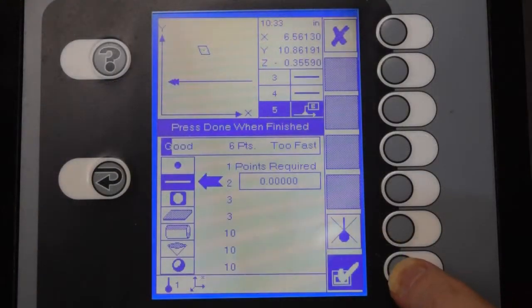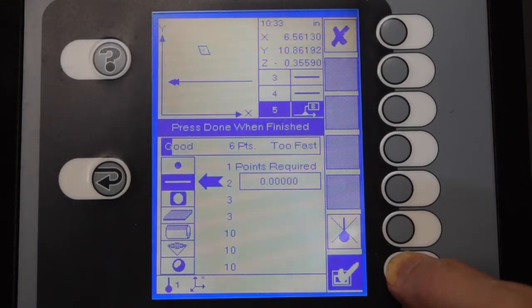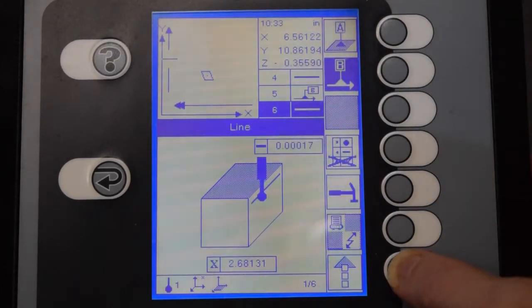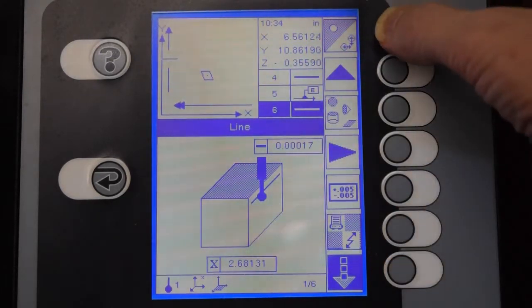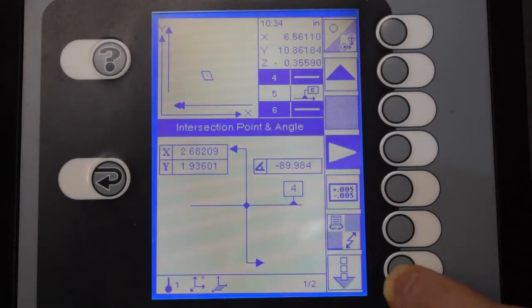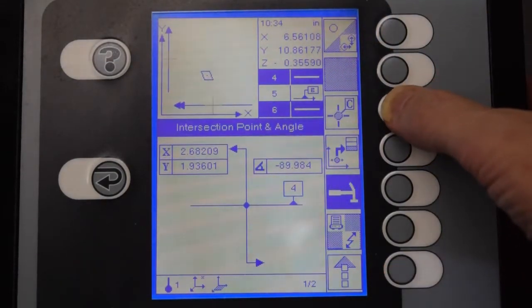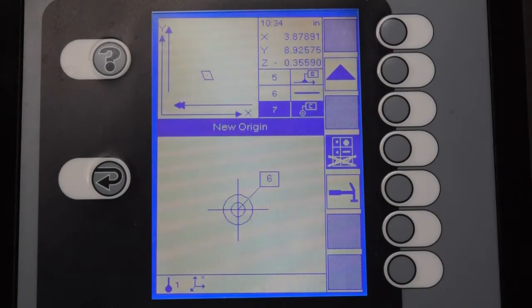Now we're going to accept the C datum. So accept the measurement. Now we need to scroll up, select the relationships button at the top, scroll back down, and now you'll see the button to select the C datum.